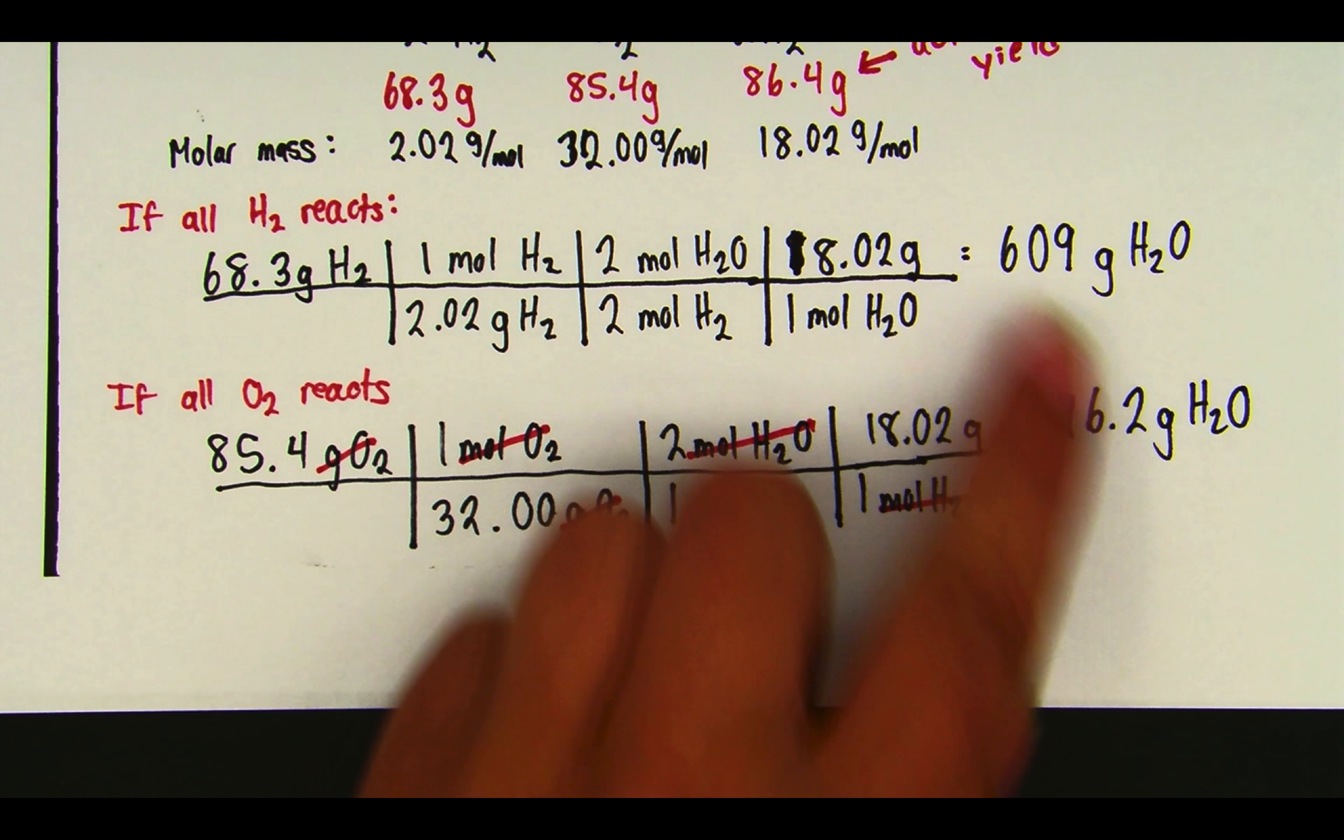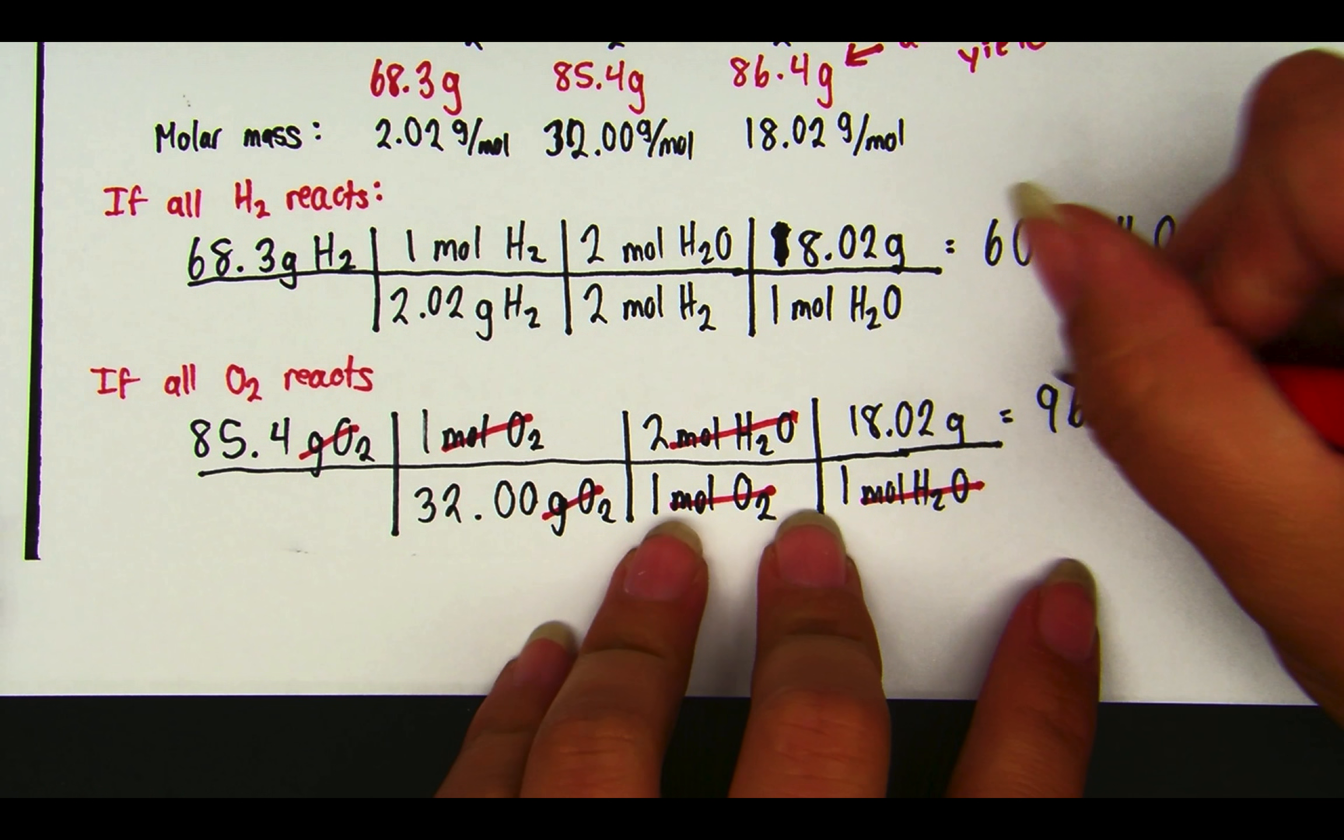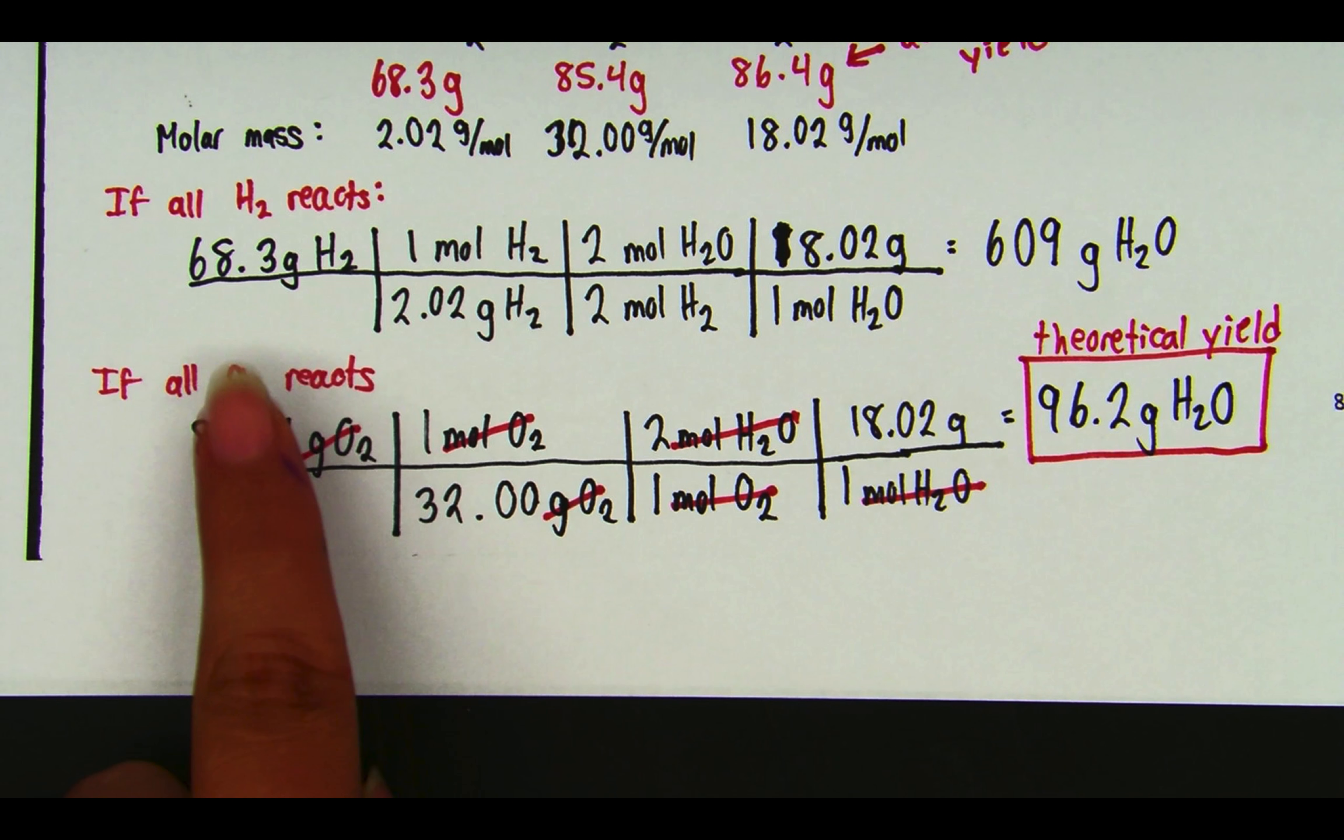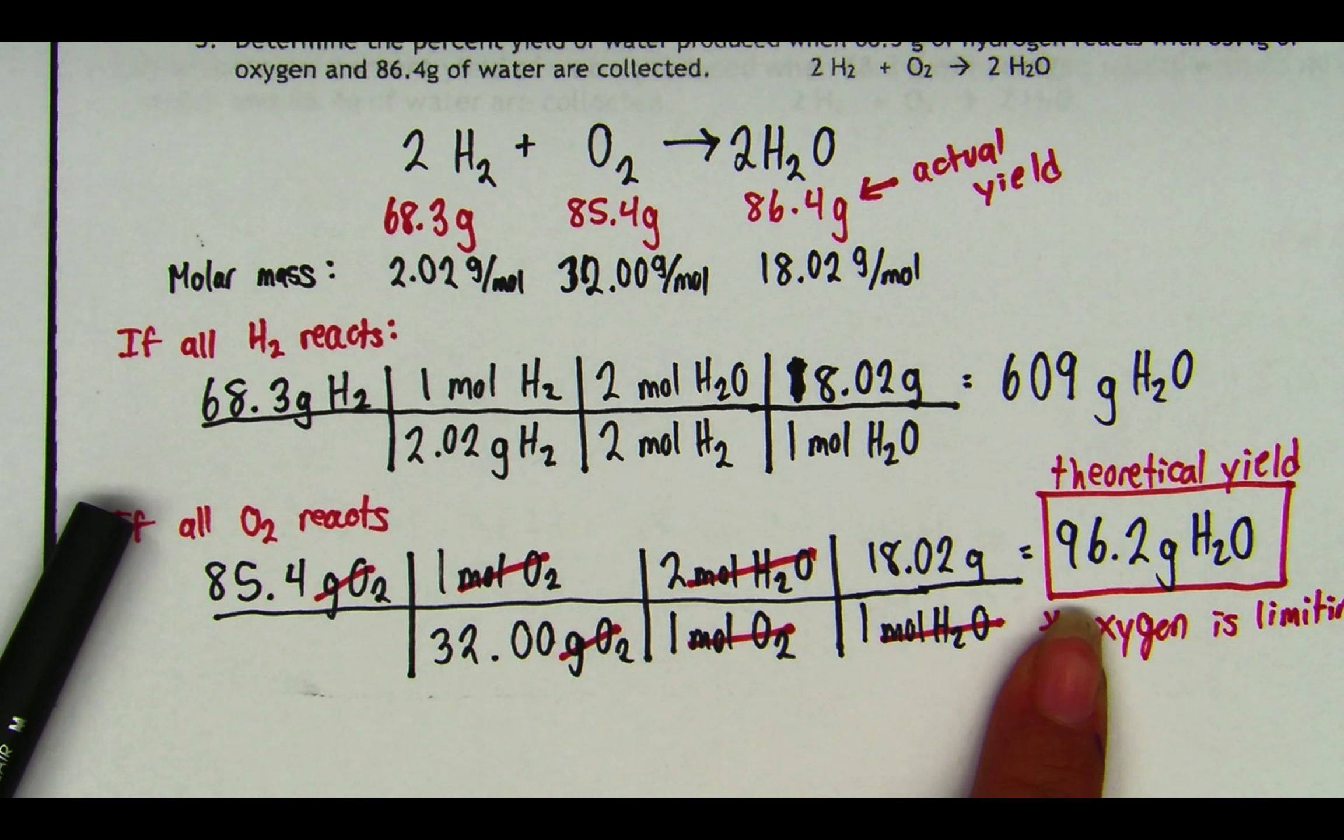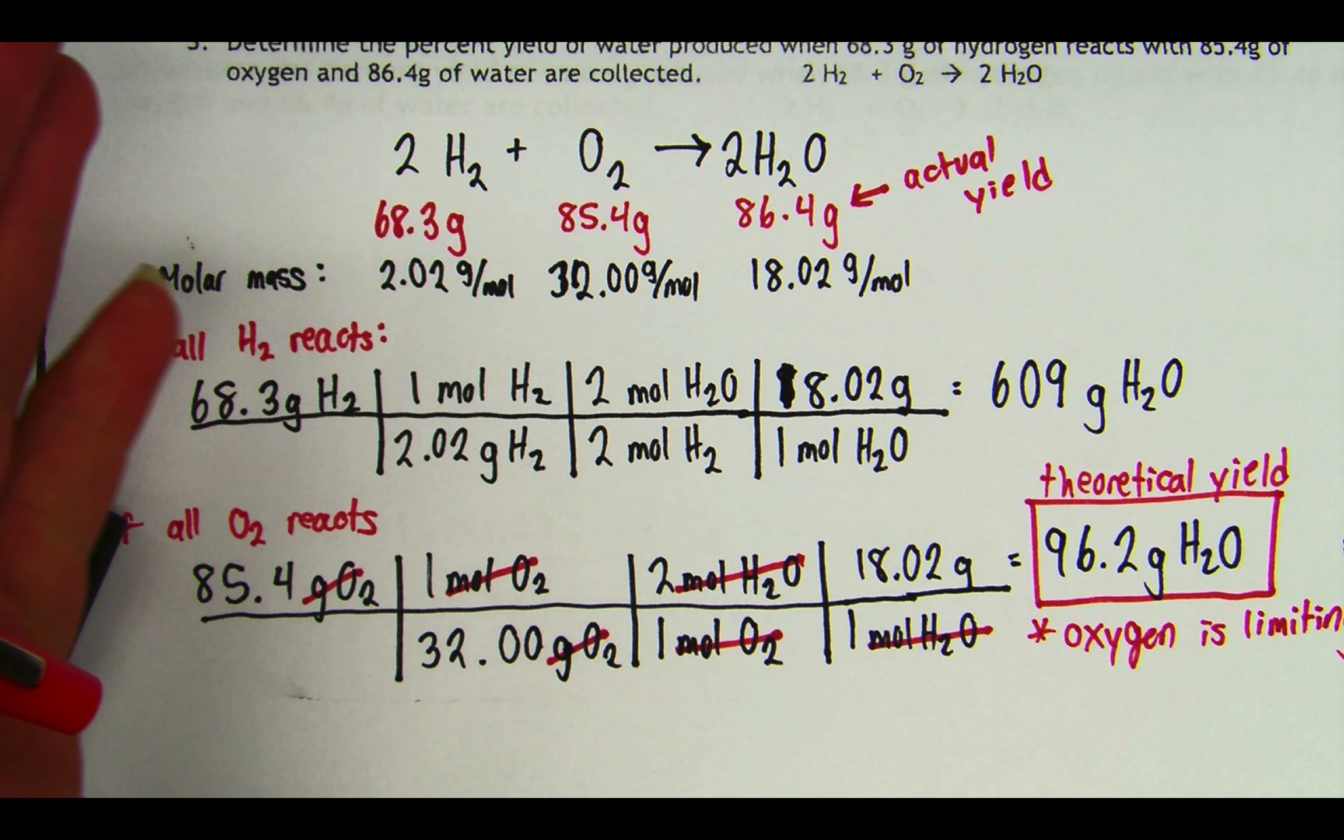So then I look at this. If these two things react, am I going to get 609 grams, the most that I could possibly get if all the hydrogen reacts? Or am I going to get 96.2 grams? Just like with the sandwiches, you always have to go by the least. So this is going to be my theoretical yield, which means oxygen is my limiting reagent. So all of the oxygen gas is going to react, all of the oxygen gas is going to react and form water, and then we're going to have some leftover H2 that doesn't have any oxygen left to react with.